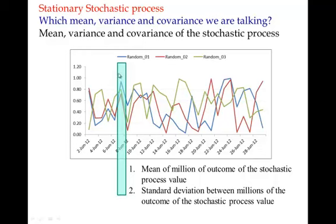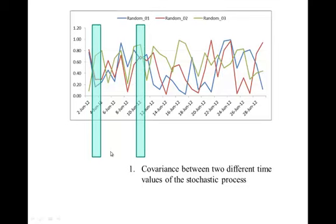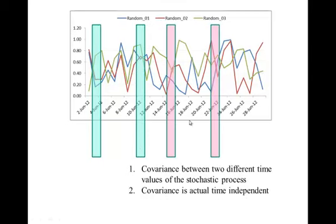The second condition: with millions of values, you can calculate the variance at any given date — say 8th June or 12th June. If the variance of those millions of values is the same regardless of which day you measure, that is the second condition of a stationary stochastic process. The third condition is that the covariance between two time periods — say 4th and 10th — should be the same as the covariance between 16th and 22nd, because both pairs are six days apart.